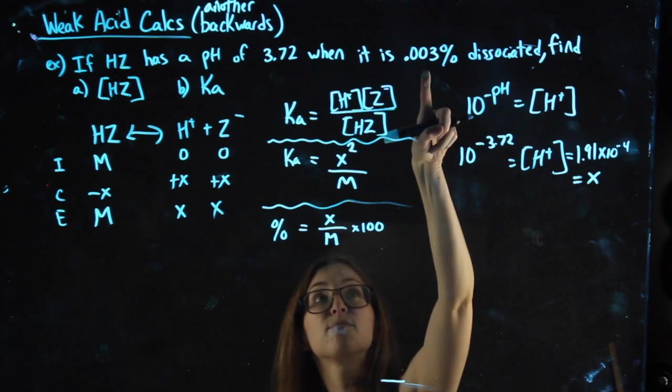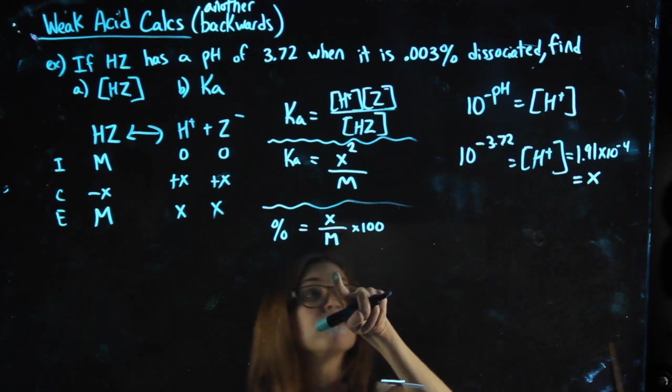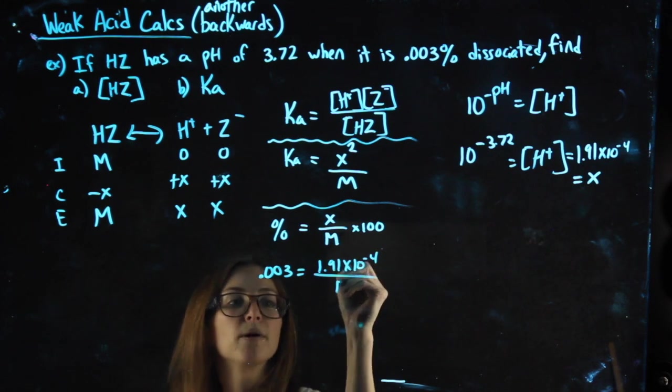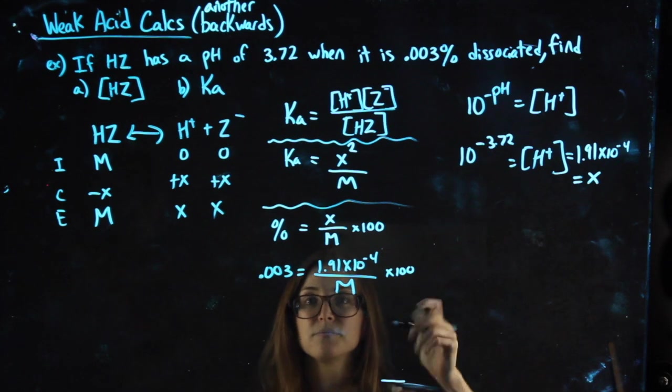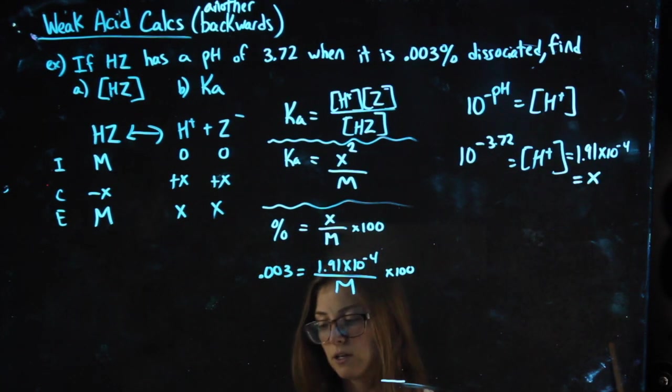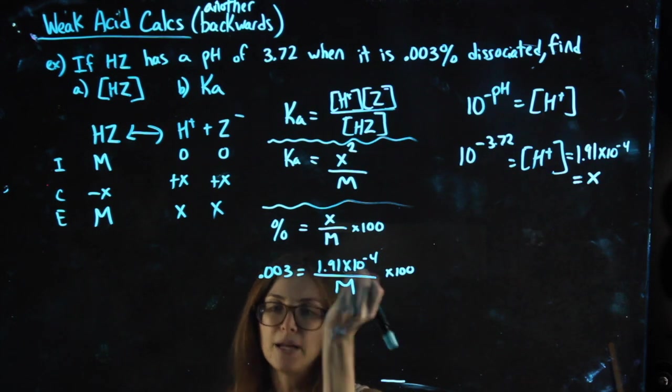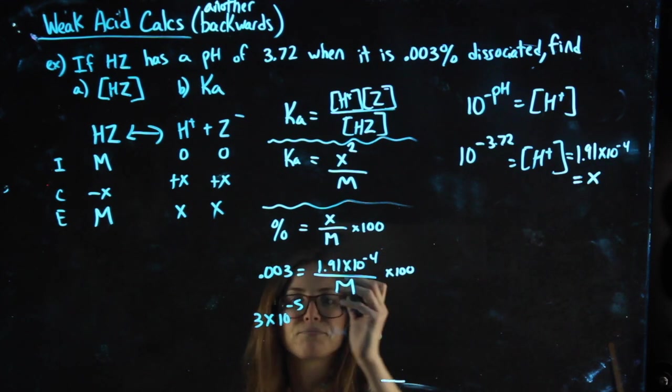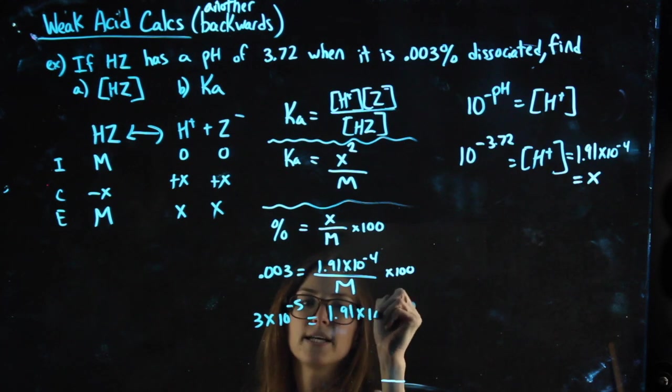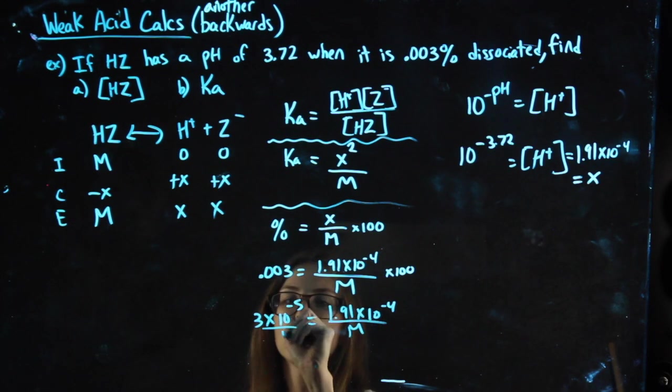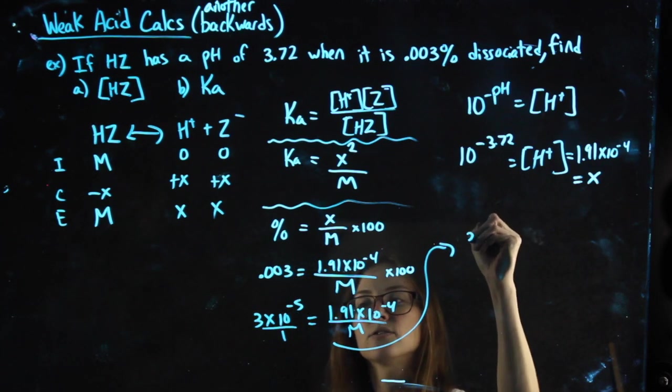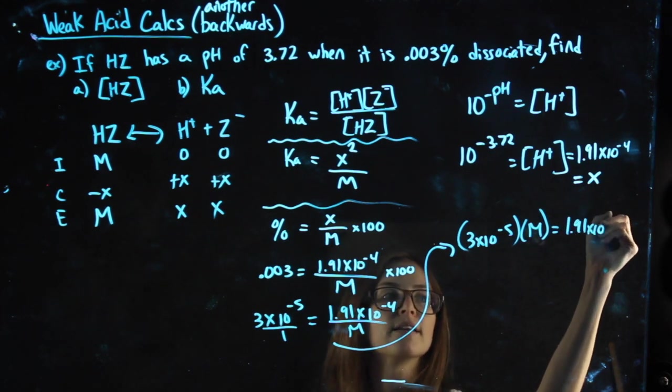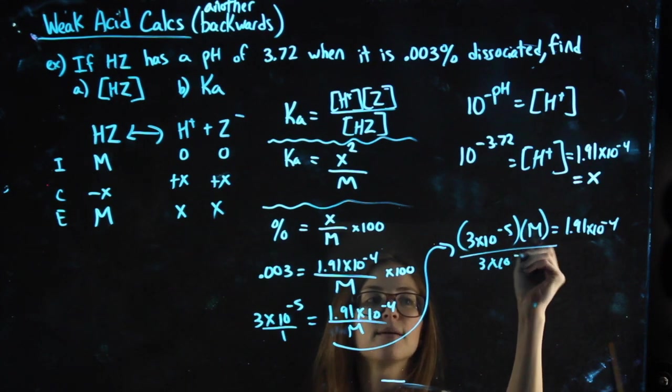I now have my X value and I have my percentage. I can plug in here to solve, plug my percent in, plug my X over the molarity of the acid that I don't know, times 100. So I'm solving this now because I have enough information. So I take my 0.003, I divide by 100. If you're doing that in your calculator, you get 3 times 10 to the negative 5. Equals 1.91 times 10 to the negative 4 over M. Put that over 1 and cross multiply. So 3 times 10 to the negative 5 times M equals 1.91 times 10 to the negative 4. Divide by that 3 times 10 to the negative 5.